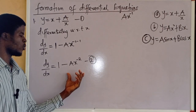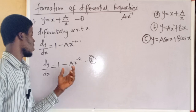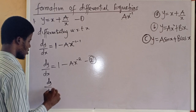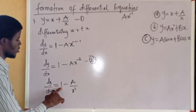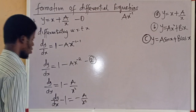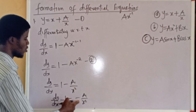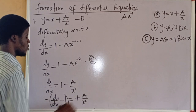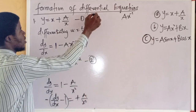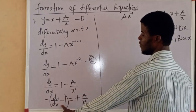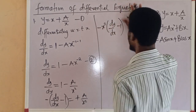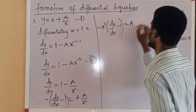So, what we'll do now is this: from equation 2, we are going to make a the subject of the formula, and the resulting expression for a will be plugged into equation 1. So equation 2 can be written as dy/dx equal to 1 minus a over x squared. Let's take 1 to the other side: dy/dx minus 1 is equal to minus a over x squared. This minus can come to the left-hand side, giving a plus. So we can multiply both sides by x squared to isolate a.